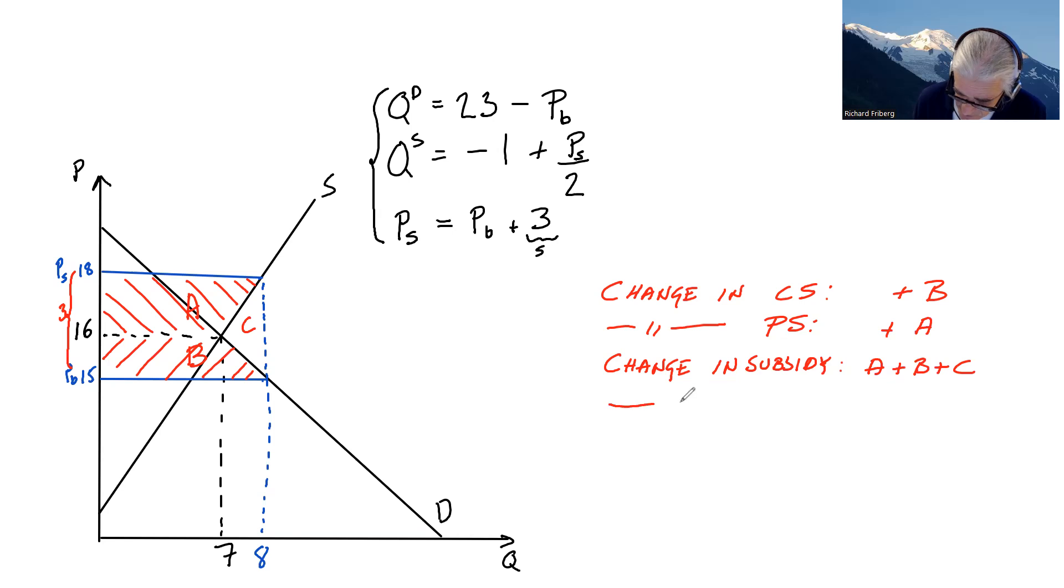What's the change in welfare? If we're measuring welfare by the sum of consumer surplus, producer surplus, and the revenue or cost to the government, then it's minus C.